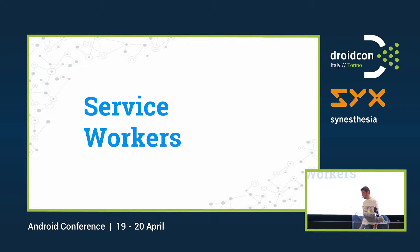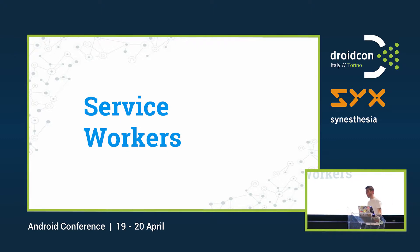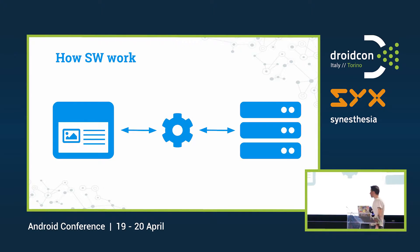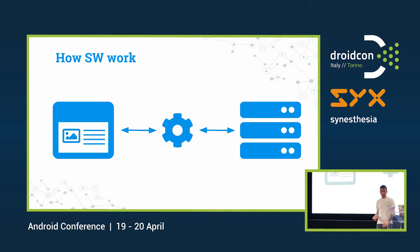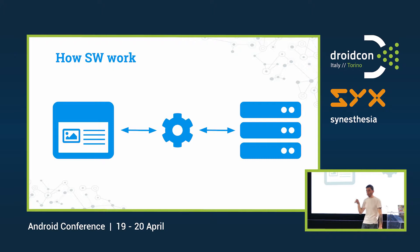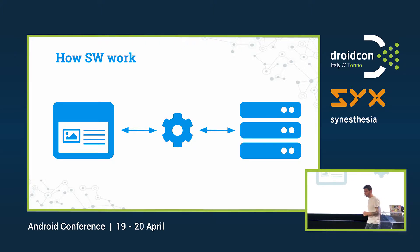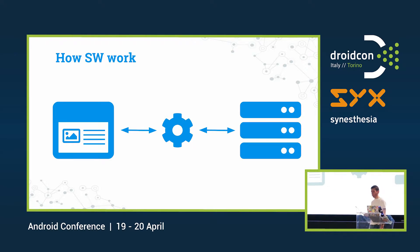If you talk about Progressive Web Apps, we should talk about Service Worker. Service Worker is the main feature, the core feature behind Progressive Web Apps. It is the enabler of a lot of features like offline navigation, push notifications, and other cool stuff. A Service Worker is like a sort of proxy between the client and the server — actually, the Service Worker resides in the client, it lives in your browser. Since Service Worker is a sort of proxy, it could be a man-in-the-middle attack, so Service Worker works only on a secure connection: you have to serve your website through HTTPS.